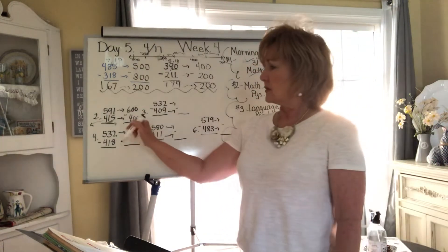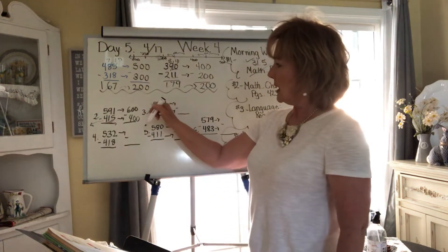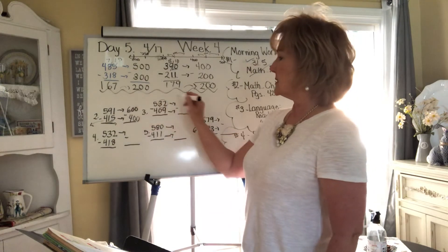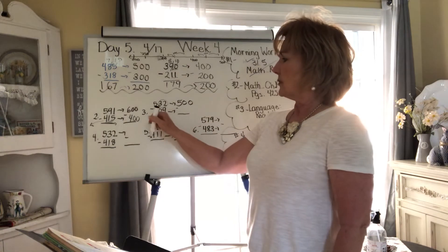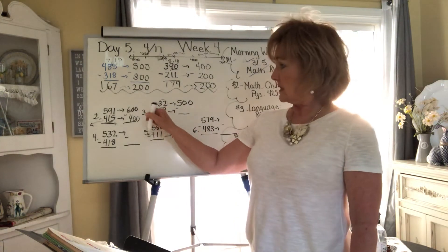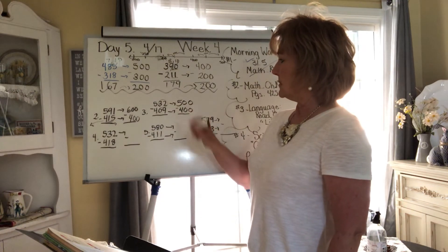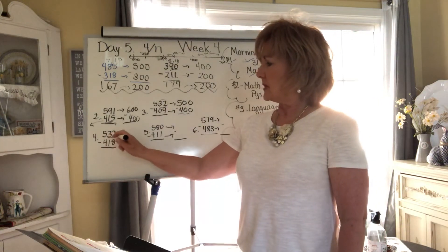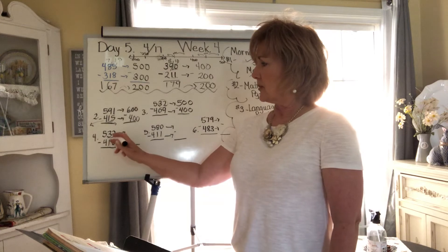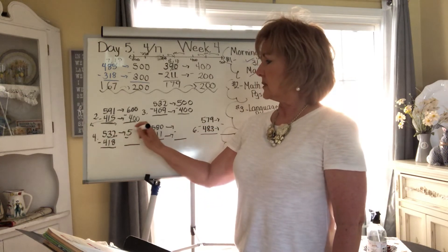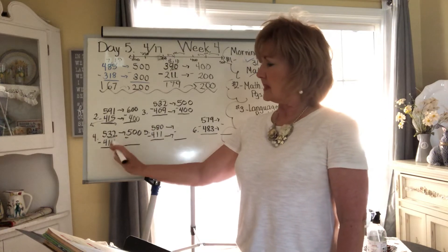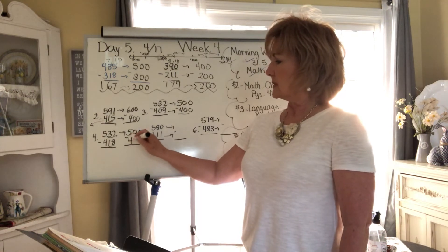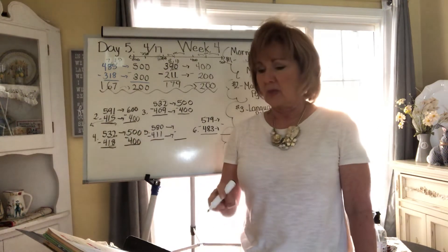532 — 32 is less than 50, so it rounds down to 500. 409 — 9 is a lot less than 50, so it rounds down to 400. Then just do the math. Number four: 532 is between 500 and 600, 32 is less than 50, so it rounds down. 418 is between 400 and 500, so it rounds down. Then you do the rest of the math.